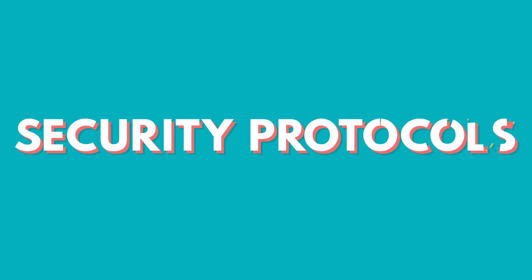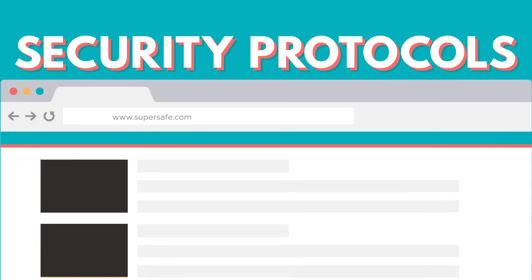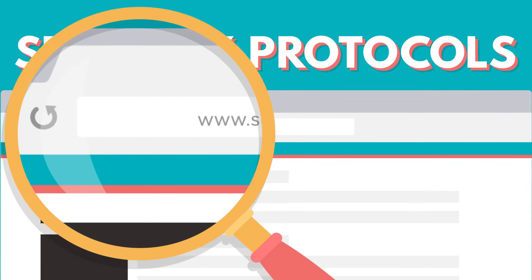Public key cryptography is the foundation of all secure messaging on the open internet, including the security protocols known as SSL and TLS, which protect us when we're browsing the web. Your computer uses this today anytime you see the little lock or the letters HTTPS in your browser's address bar, meaning your computer is using public key encryption to exchange data securely with the website you're on.